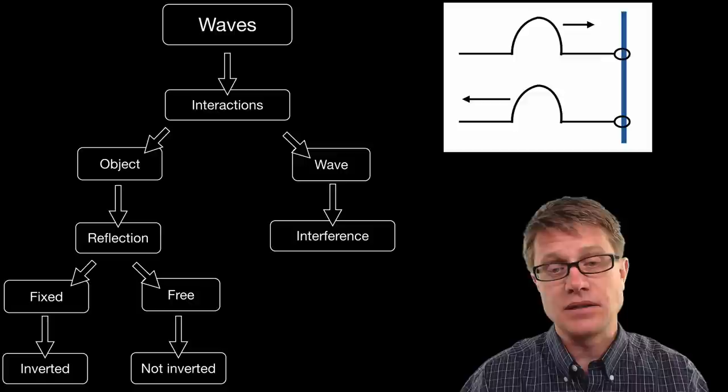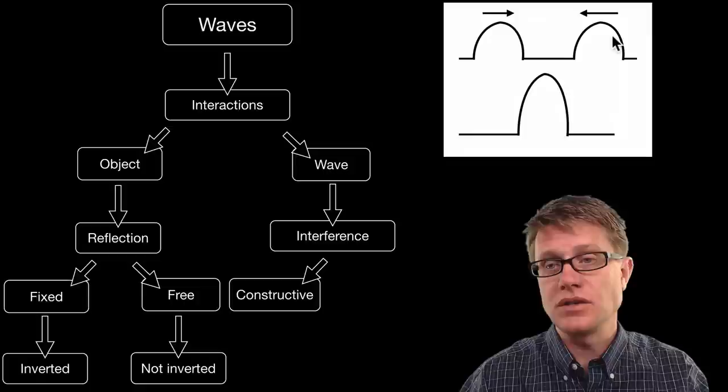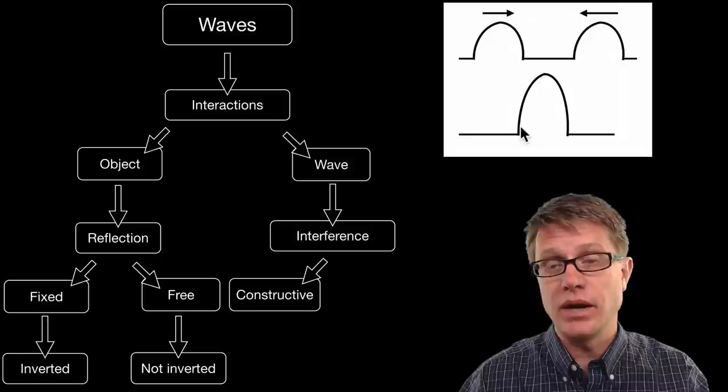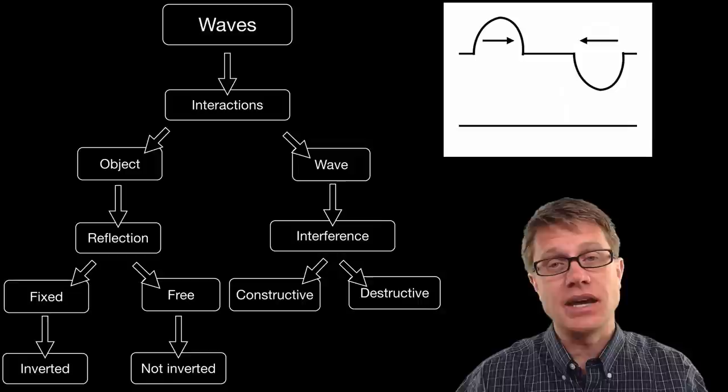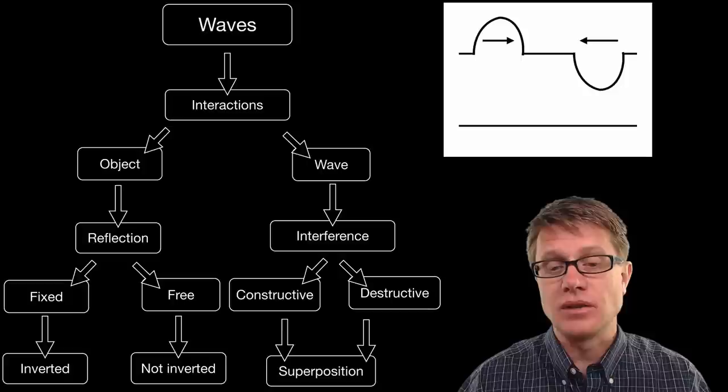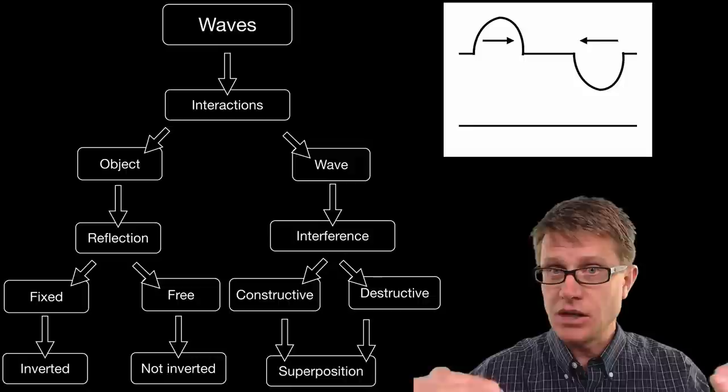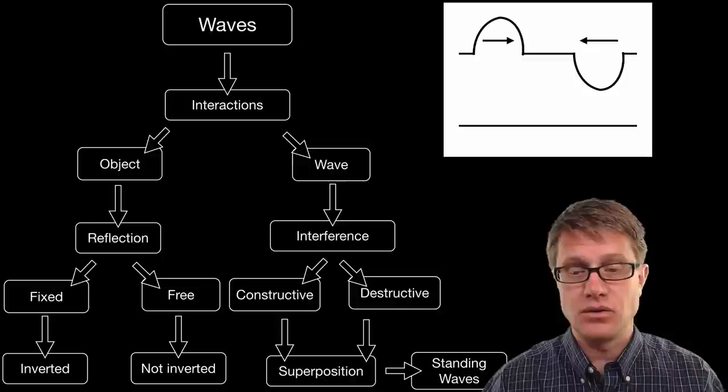Now when waves hit each other we get what is called interference. Two waves interacting. That interference can either be constructive. Constructive is when two waves come towards each other and they are both on the top. So what do we get? When they hit we get one big wave. We are adding those waves together. So we are constructing a bigger wave. If it is destructive we are on either side and what do we get? We cancel each other out. So we are destroying the size of that wave. And so we use the law of superposition to figure out how big that wave is. And it is really easy. If you are one centimeter on top on both of those waves and it is constructive we just add one plus one and we get two.